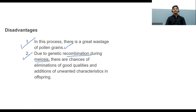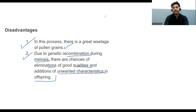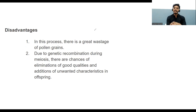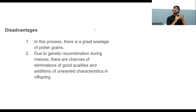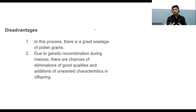For example, a beetle in green bushes develops green color to camouflage, but sometimes due to variation, blue or red colors also appear — green color population grows, but unwanted colors also come. That is the nature of variation. So there are both advantages and disadvantages to cross-pollination.